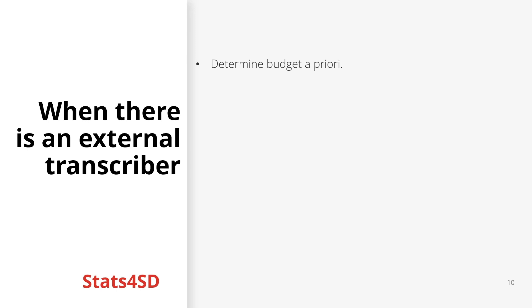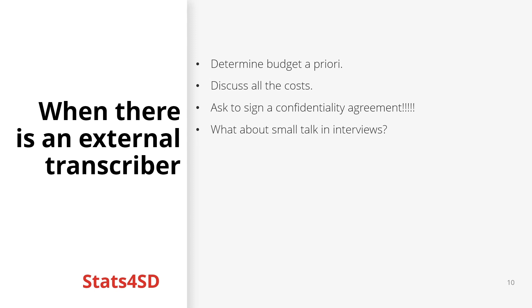We need to determine the availability of the budget prior to sending recordings to the transcriber and check charging methods — for instance, per recorded minute or hour or by the time taken to transcribe. We need to discuss all the costs involved such as VAT, supplementary charges and when they are applied. It would also be prudent to ask them to sign a confidentiality agreement. We need to determine whether small talk at the beginning of interviews needs to be transcribed, and check the quality of one finished transcript before sending them more.